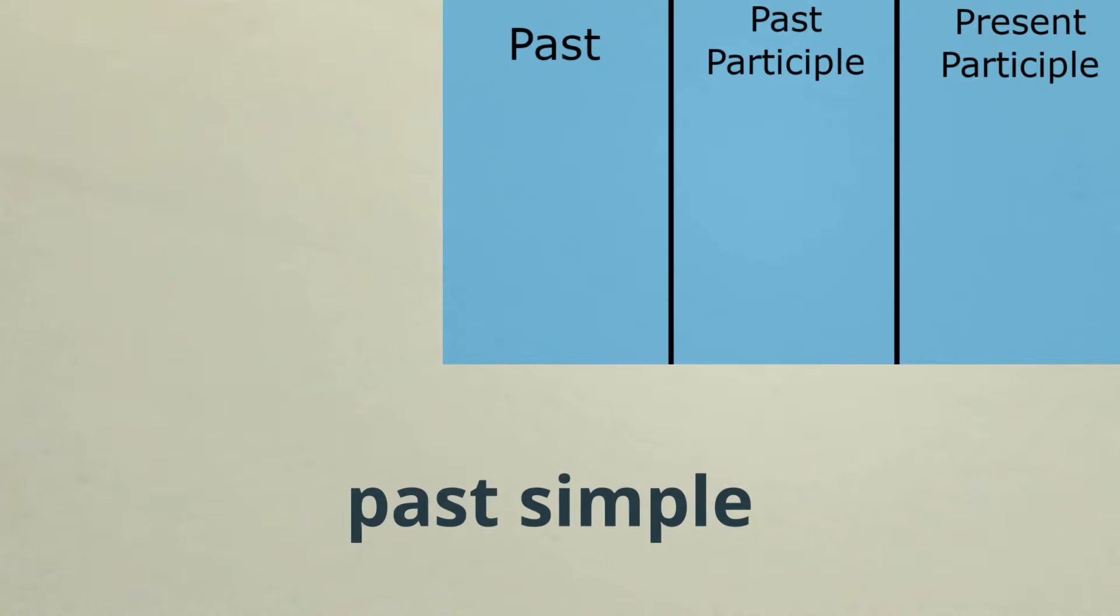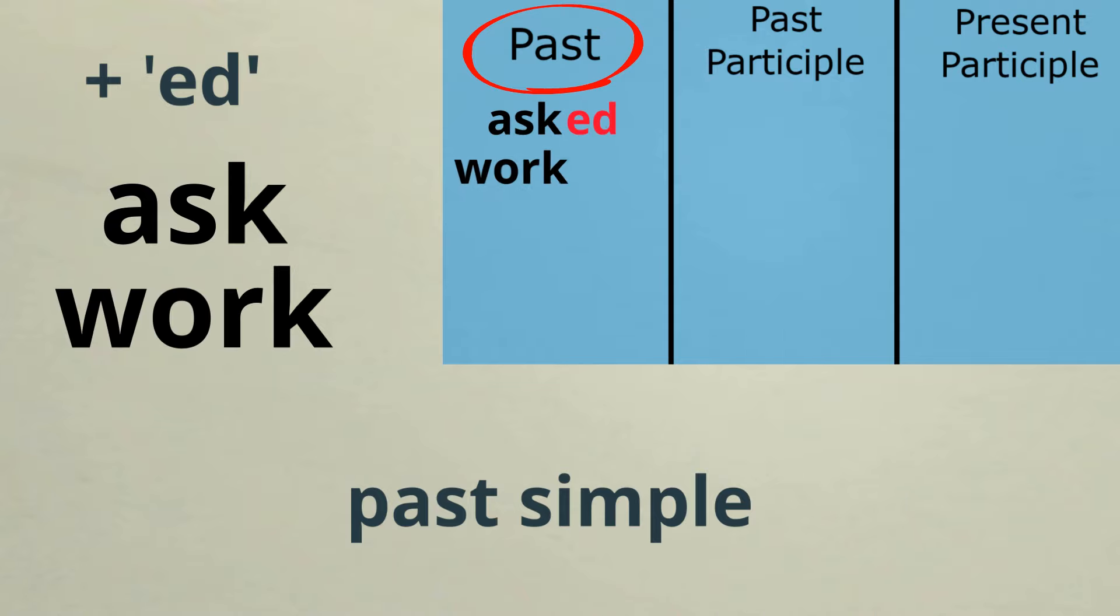To write in past simple, we use the past tense form of the verb. For regular verbs, this just means adding –ed. Here are two examples: ask becomes asked, work becomes worked.